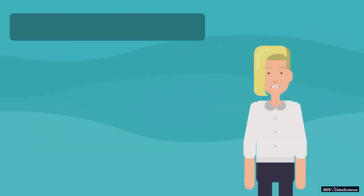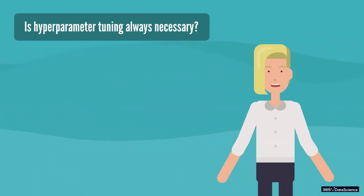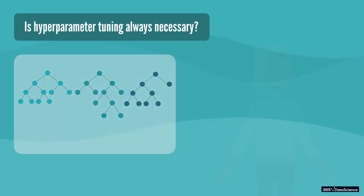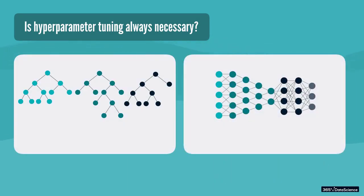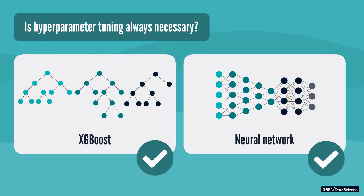At this point, you might be wondering, is hyperparameter tuning always necessary? When we're employing algorithms with several parameters, as in the case of ensemble learners like XGBoost, or when we have a deep learning algorithm like Neural Networks, then hyperparameter tuning is a must.